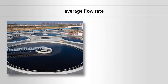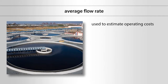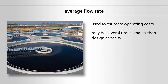An average flow rate should also be determined, which will be used to estimate operating costs. Costs such as chemical and power usage depend upon the actual gallons of water treated, not the capacity of the plant. The average flow rate may be several times smaller than the design capacity. For example, it is not unusual for a water treatment plant with a design capacity of 1000 GPM to have an average flow rate of 300 GPM.